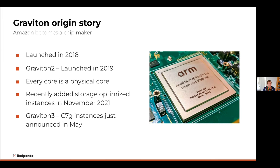Let's talk a bit about Graviton. We've all used ARM processors if we have a mobile device, so we all have some familiarity with ARM chips or Raspberry Pis. Amazon first started with Graviton in 2018. The performance was still in early stages, and very quickly after the initial launch, Graviton 2 came out a year later, which was actually a 50% performance improvement on the original Graviton launch.